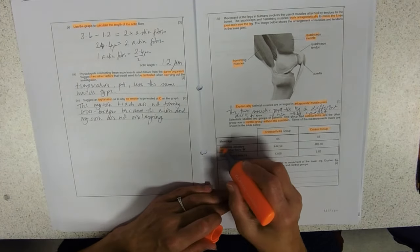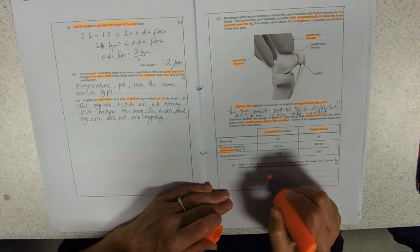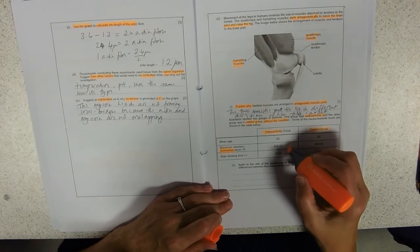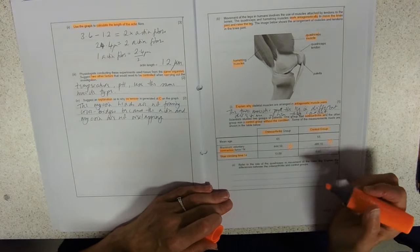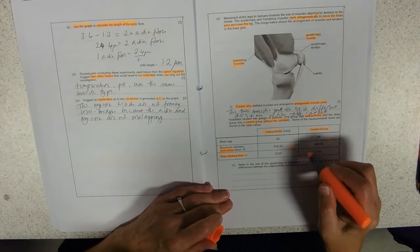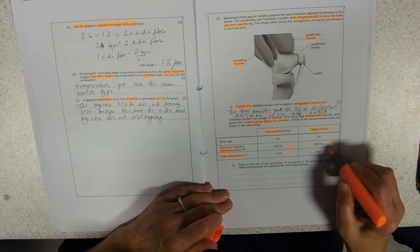Maximum voluntary contraction force. And this is less and that is more. And time taken to climb a set of stairs, presumably the same set of stairs, longer, shorter.